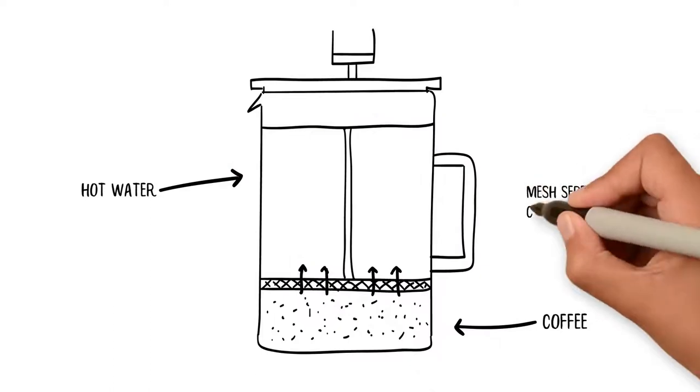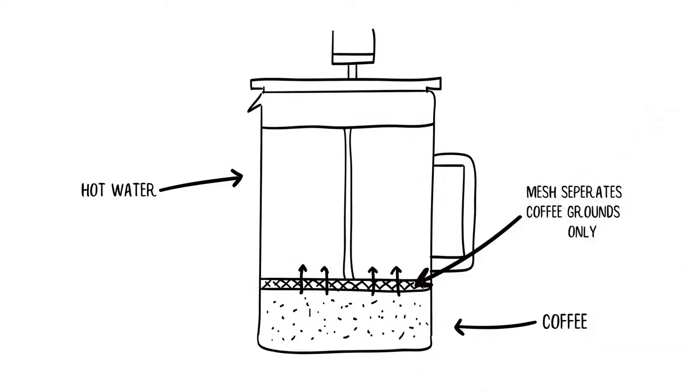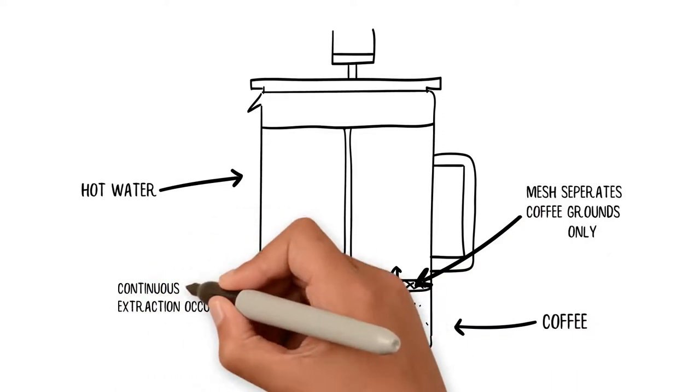The mesh in the bottom only serves to separate the coffee grounds from your coffee cup. It does not stop the extraction process.